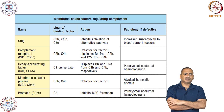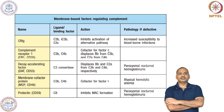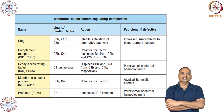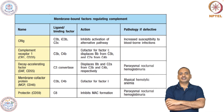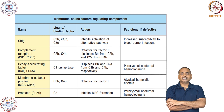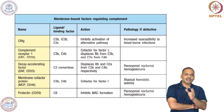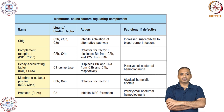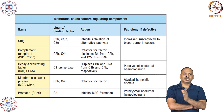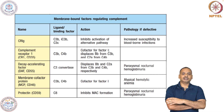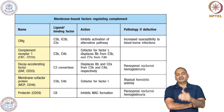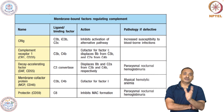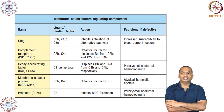Another membrane-bound factor is membrane cofactor protein, MCP or CD46, which interacts with C3b and C4b, acting as a cofactor for factor I. Deficiency of MCP results in atypical hemolytic anemia. Another molecule is protectin, also known as CD59, which interacts with C8 and inhibits MAC formation, causing paroxysmal nocturnal hemoglobinuria. These are the regulatory factors, and any problem with them results in disease development.